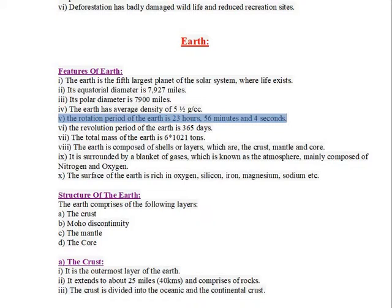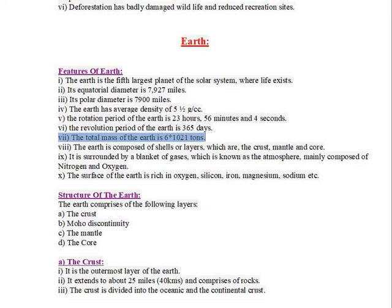The rotation period of the Earth is 23 hours, 56 minutes, and 4 seconds. The revolution period of the Earth is 365 days. The total mass of the Earth is 6 × 10²¹ tons.